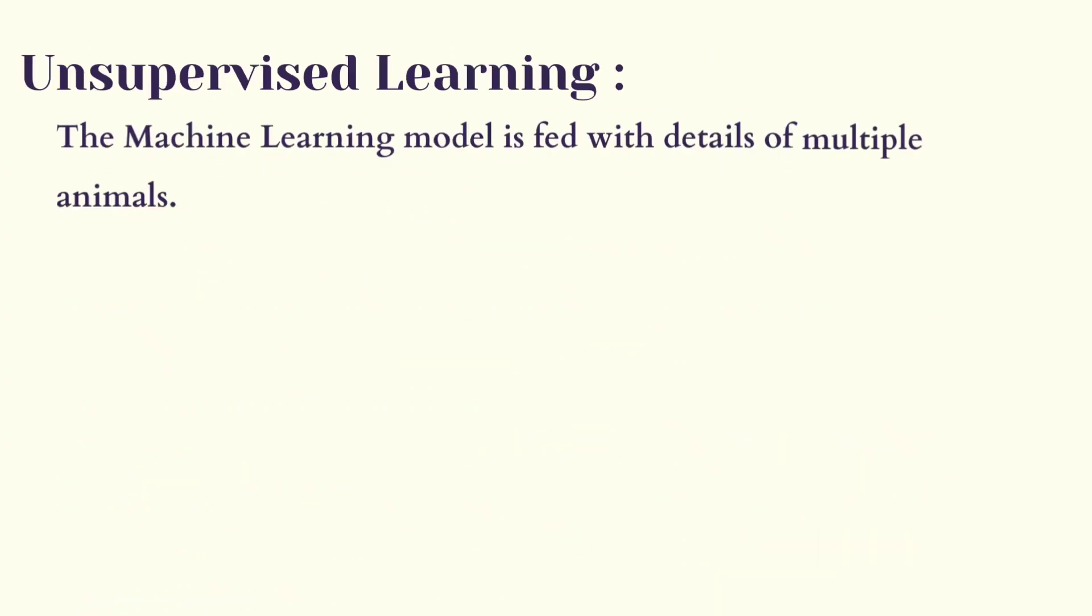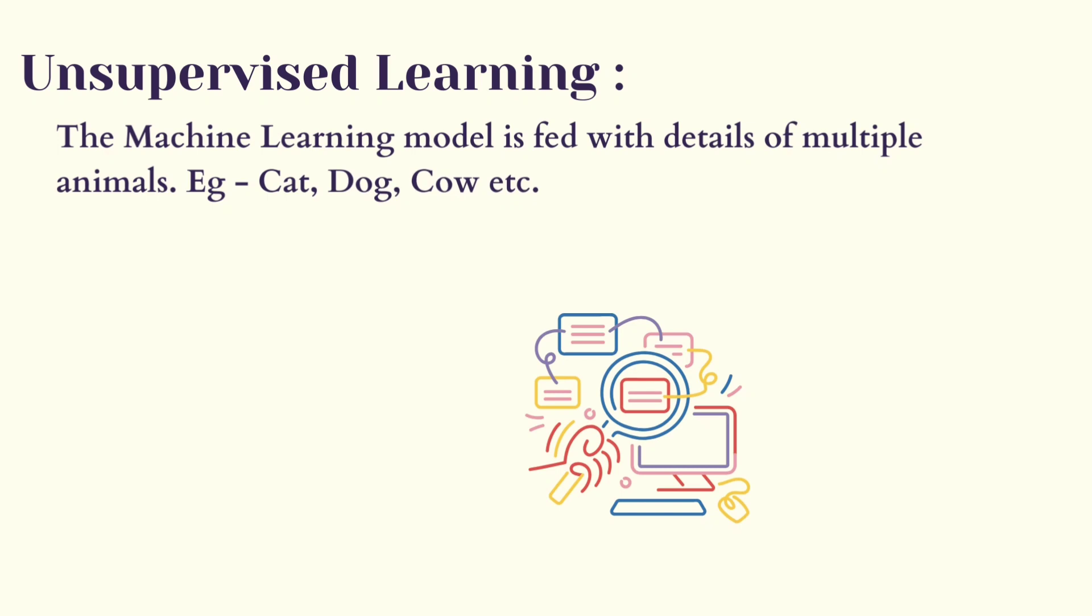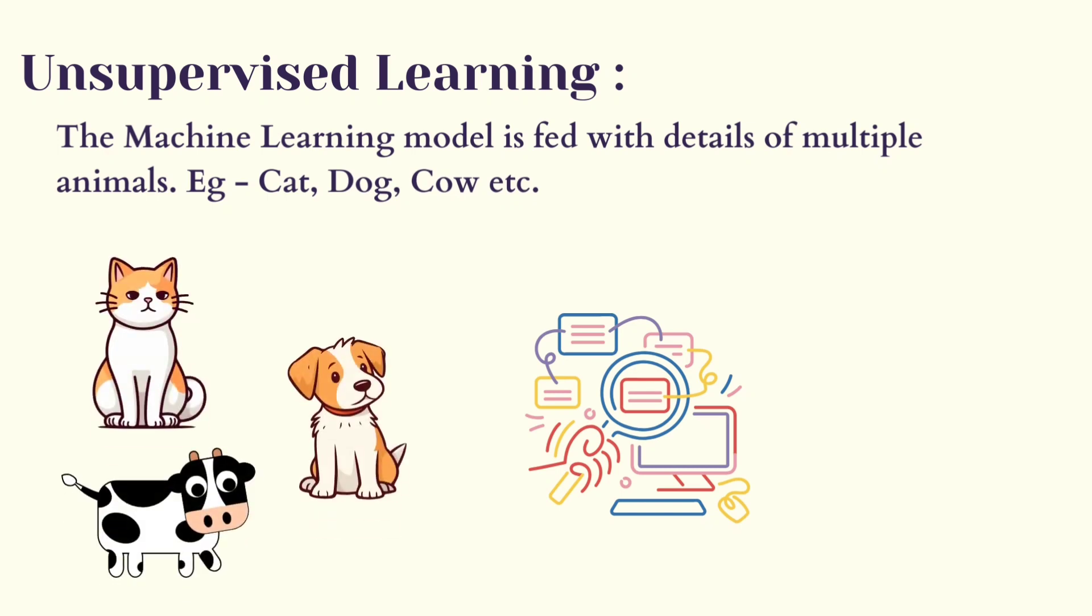The model is fed with details of multiple animals, for example cat, dog, cow, etc. Features of the animals such as ears, speech, legs, body type, etc. will be analyzed for all the animals fed to the model. Now the model has analyzed the features of these animals, and when we provide the machine learning model with any animal, it will compare the features.